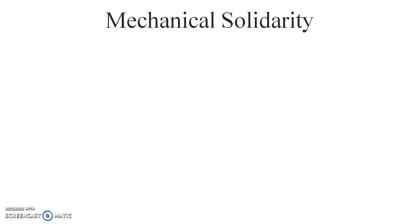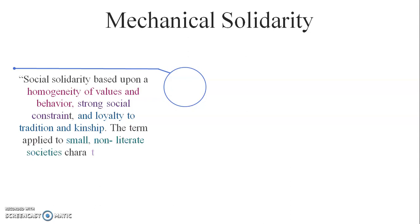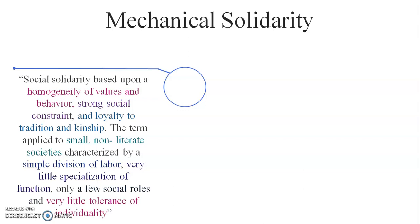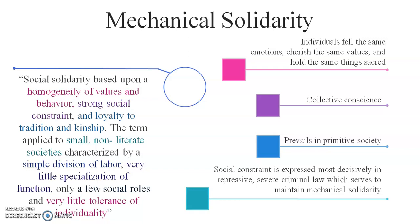Durkheim saw both types of society as representing two types of social solidarity: mechanical solidarity and organic solidarity. Mechanical solidarity is social solidarity based upon a homogeneity of values and behavior, strong social constraint, and loyalty to tradition and kinship. It applies to small, non-literate societies with a simple division of labor, very little specialization, only a few social roles, and very little tolerance of individuality. Individuals felt the same emotions, cherished the same values, and held the same things sacred — a collective conscience.